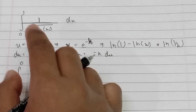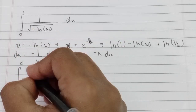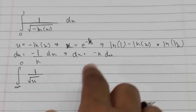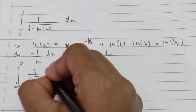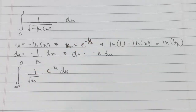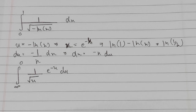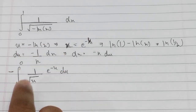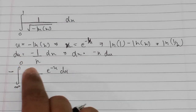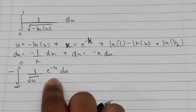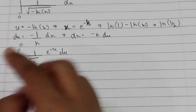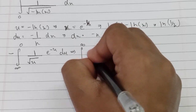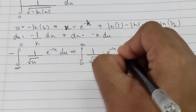Plugging back in, we get 1 over square root of u, and dx becomes e to the negative u times du. We also have the negative sign from the substitution, giving us negative integral from positive infinity to 0 of 1 over square root of u times e to the negative u du. Flipping the limits removes the negative, giving integral from 0 to infinity of 1 over square root of u times e to the negative u du.